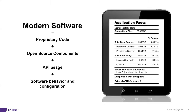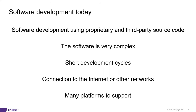Well, the world changed. Today, the modern software recipe looks like you put some proprietary code that you write yourself, but to avoid reinventing the wheel, you use open source components to add functionalities that are already there. You add API usage to the whole mix to get more connectivity, better configuration, and software behavior — to apply it to more platforms and make it more integratable.